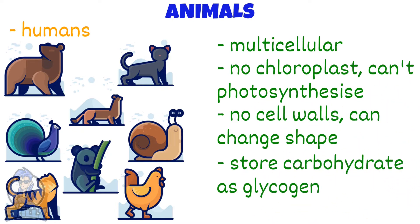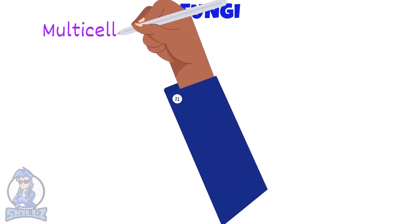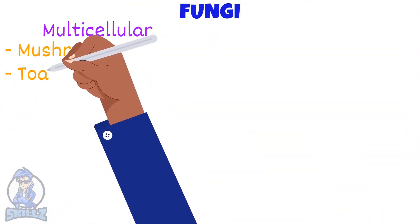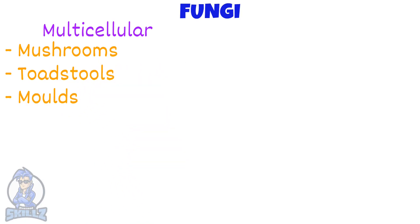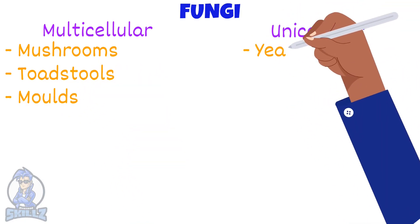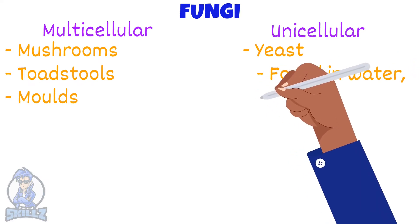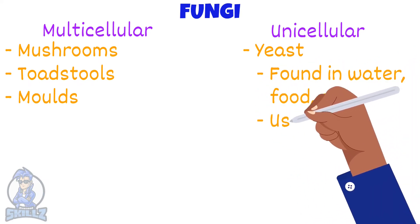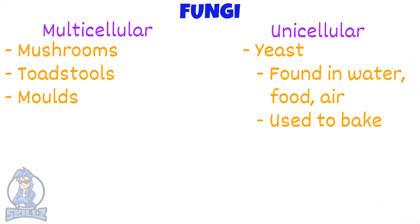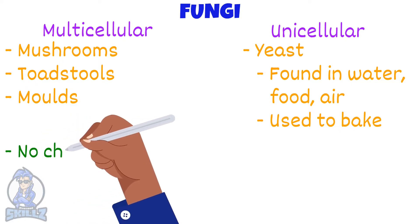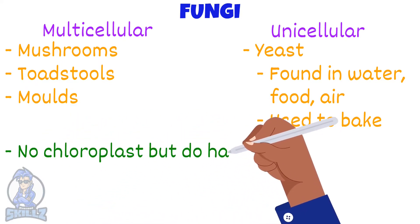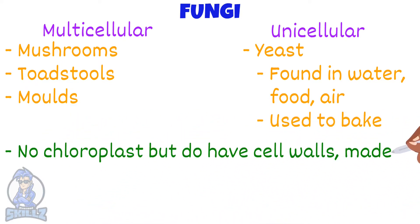Some fungi are multicellular, including mushrooms, toadstools and moulds, while others are unicellular, such as yeast. Yeast is found on fruits, in soil, in water and many other places. We use yeast to bake. Their cells have no chloroplasts, but they do have cell walls. However, their cell walls are made of chitin.